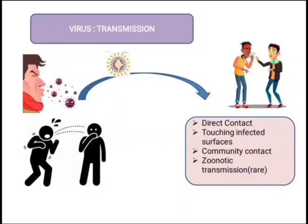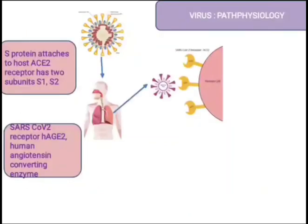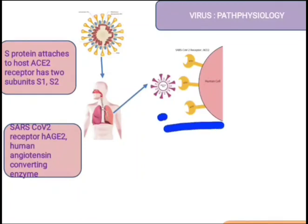It also transfers through zoonotic transmission — that is, from animals to humans — but this is a very rare event. Now what happens when the virus enters a human body? The human cells have ACE2 receptors on their cell surface, called angiotensin-converting enzyme receptors. These receptors interact with the virus — specifically, the virus S protein, the spike protein, interacts with the receptors present on the cell surface. This is like a lock-and-key model, and the virus attaches to the human cell and can very easily open the doors to the inside of human cells.